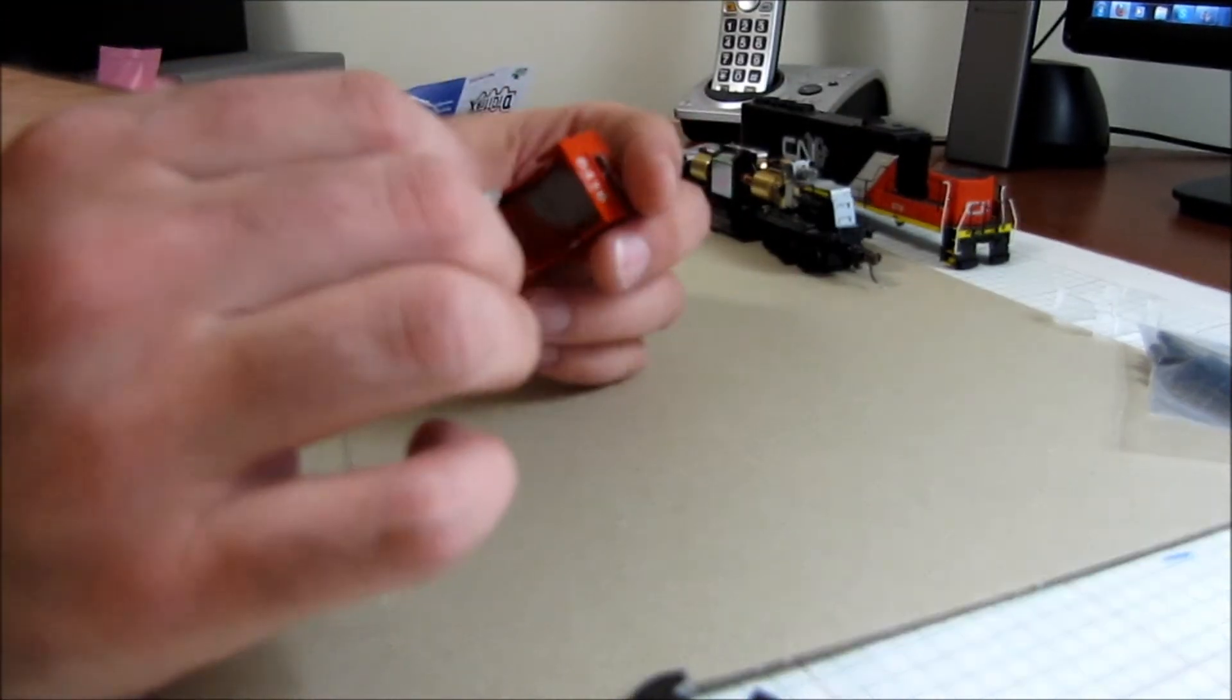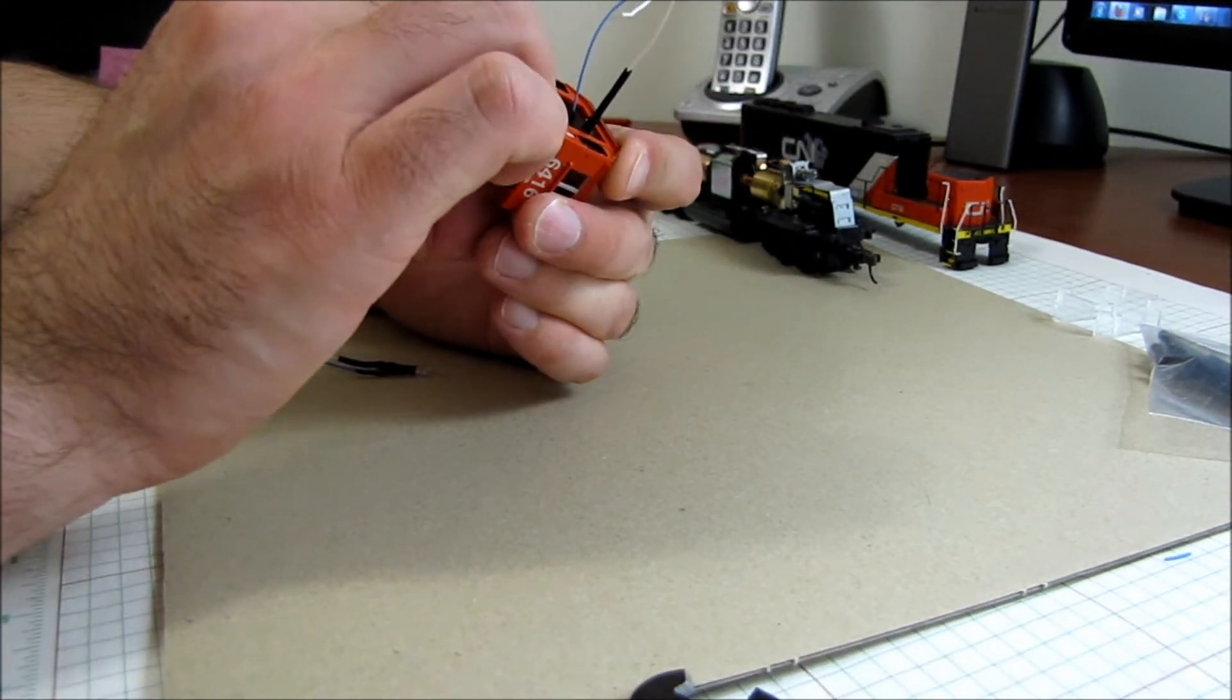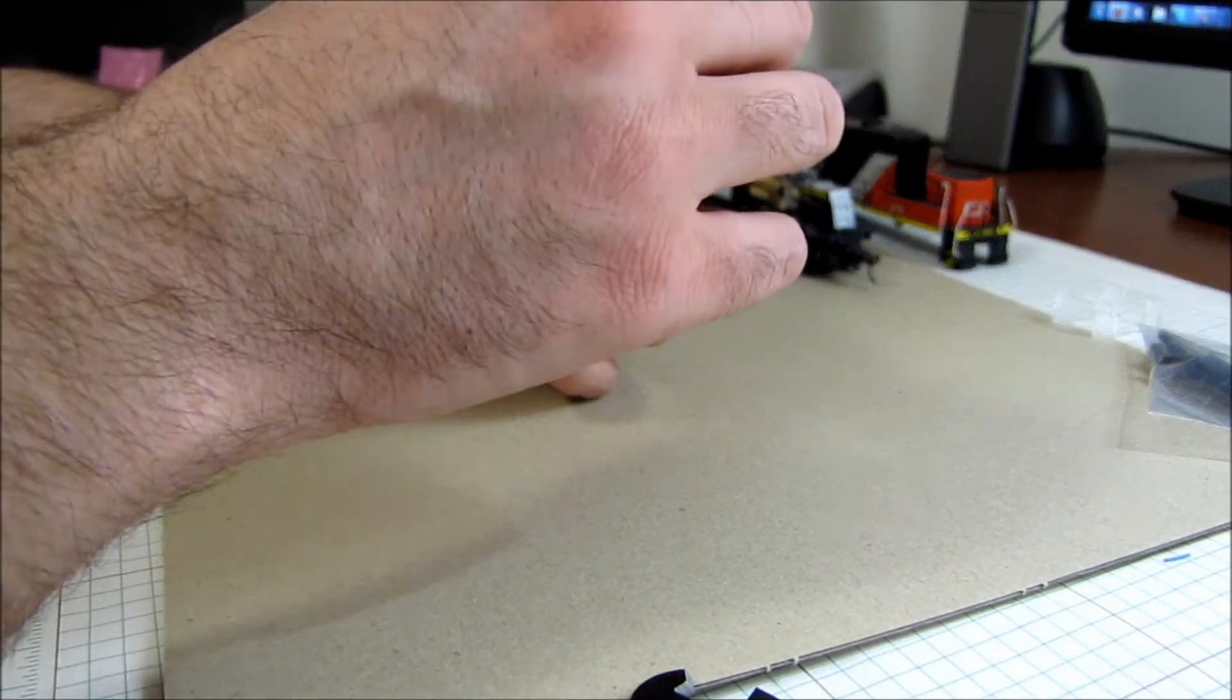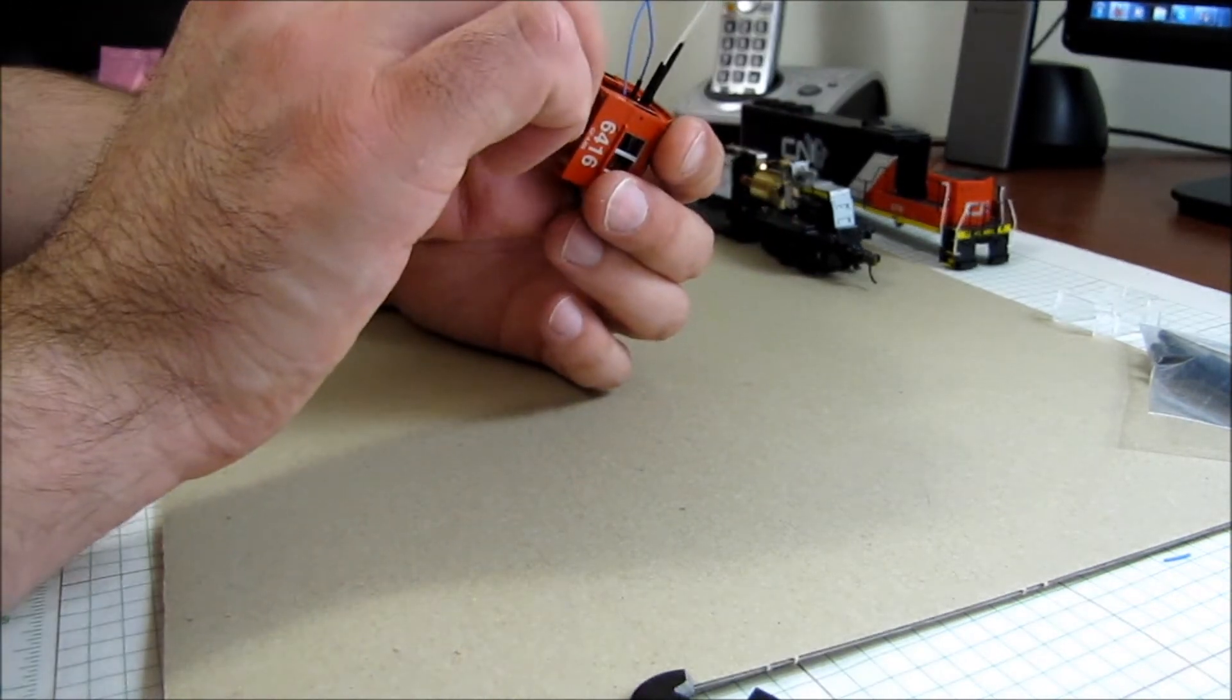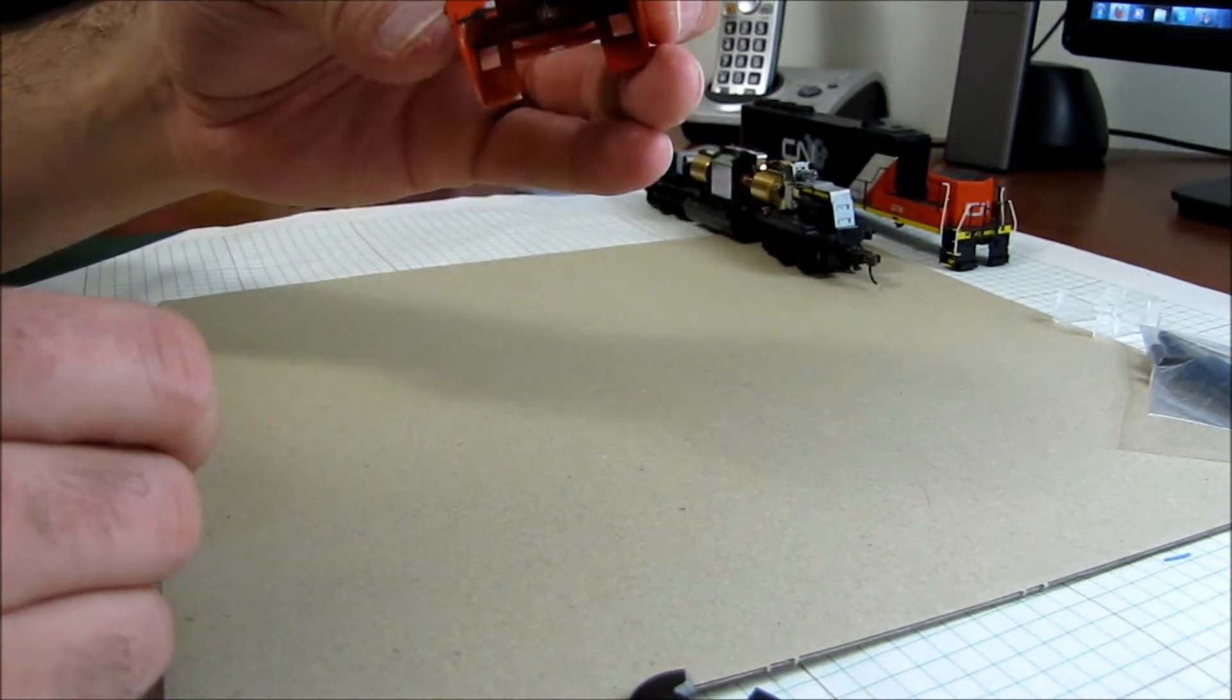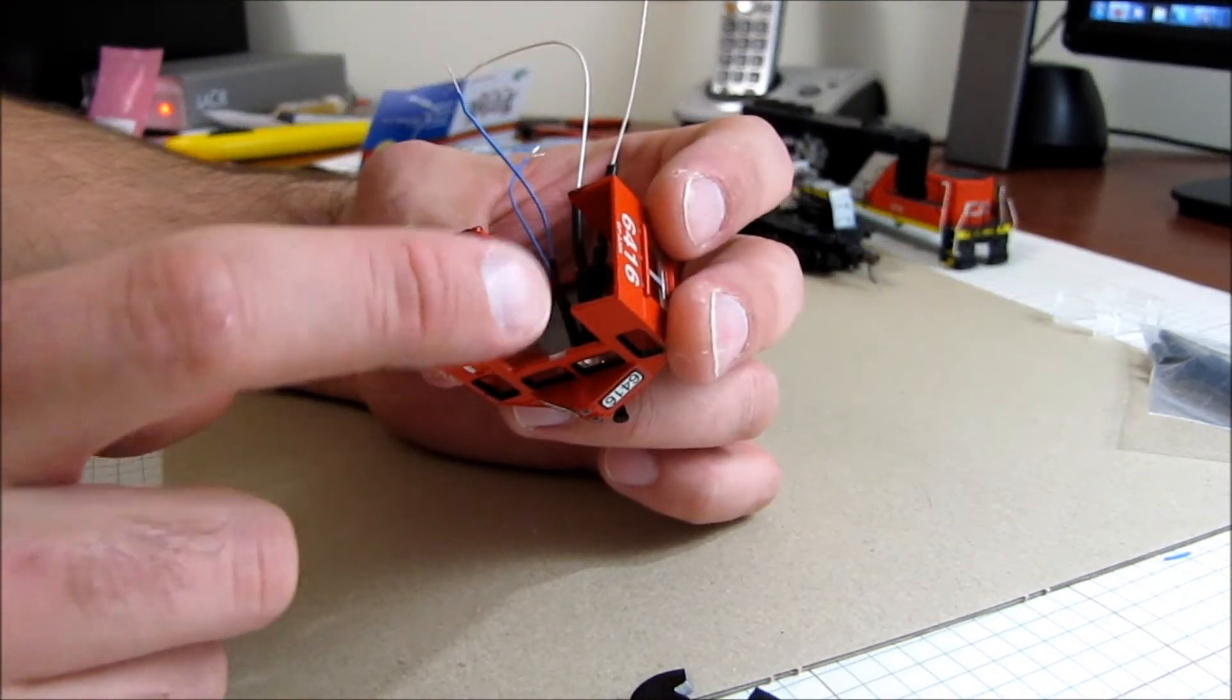There you go, two complete LEDs there. Now all we have to do is just fit them in here. That one is installed. I'm just sliding them in the hole, and because I used a 2 mil, they fit in there snug. There you go, they're in the cab there. I may put some glue on there, I may not.